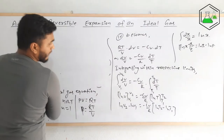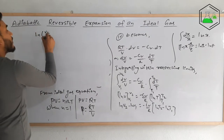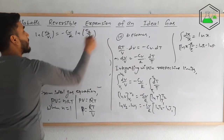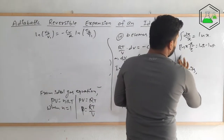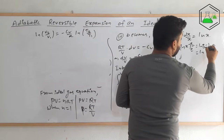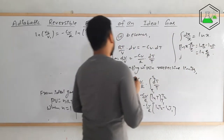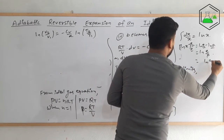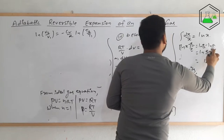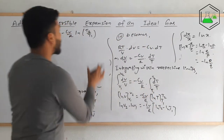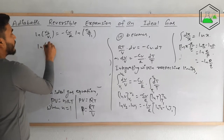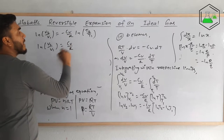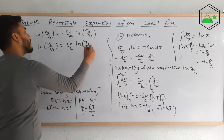This can be written as ln(V2/V1) = −(Cv/R) ln(T2/T1). If we flip the sign by taking the reciprocal inside the log on the right side, we get ln(V2/V1) = (Cv/R) ln(T1/T2). Rearranging, (R/Cv) ln(V2/V1) = ln(T1/T2).